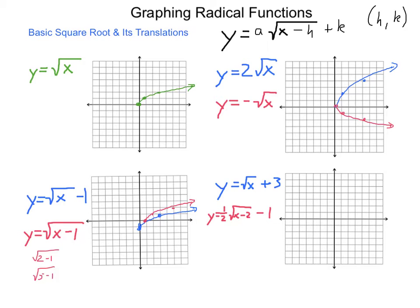For our last set in this section, y equals the square root of x plus 3: this plus 3 is on the outside, so it is going to be a vertical translation. We start at the point 0,3 and have movements like normal — move right 1, up 1; right 4, up 2; right 8, up 3. We get a graph that grows upward from 0,3.